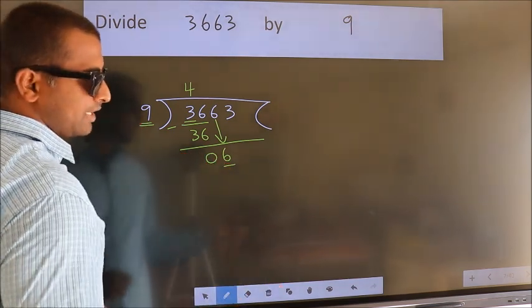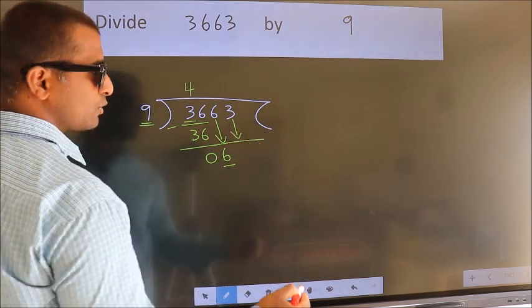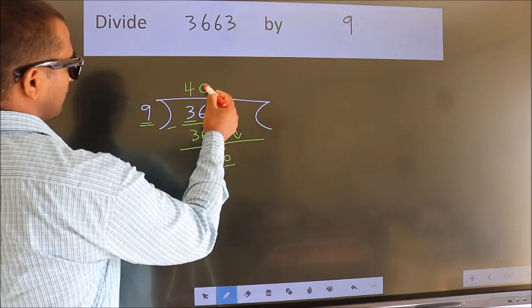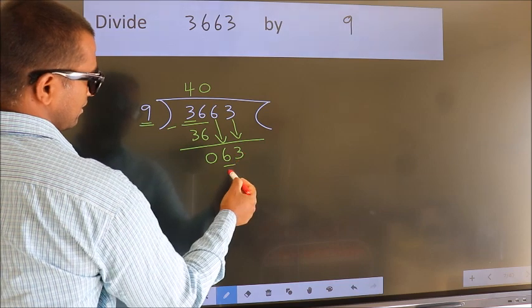So we should bring down the second number. And the rule to bring down the second number is put zero here. Then only we can bring down this number. So 63.